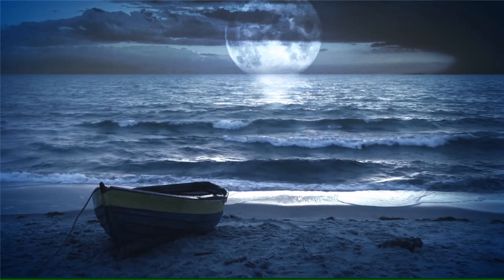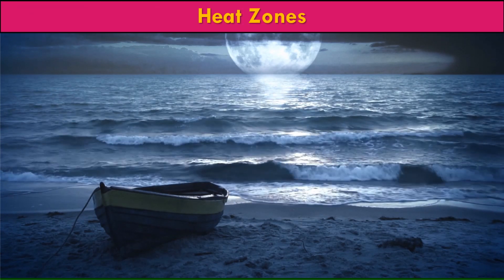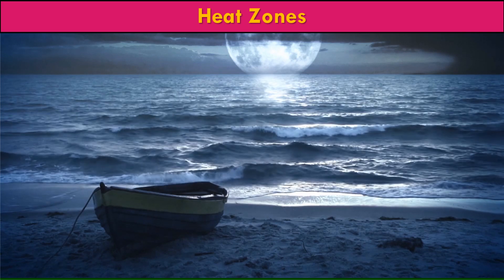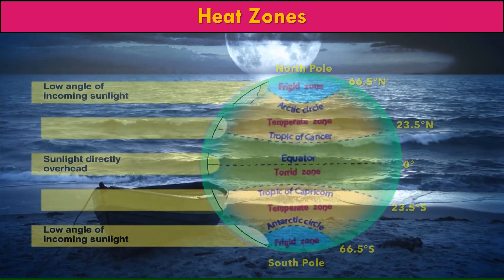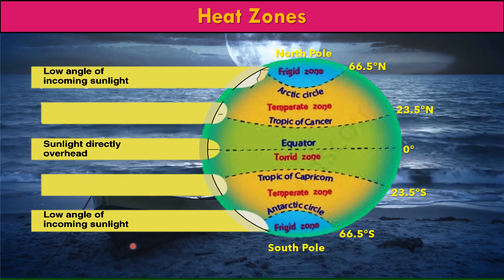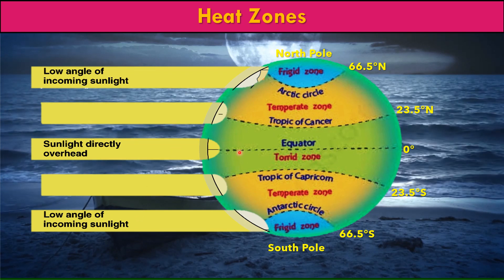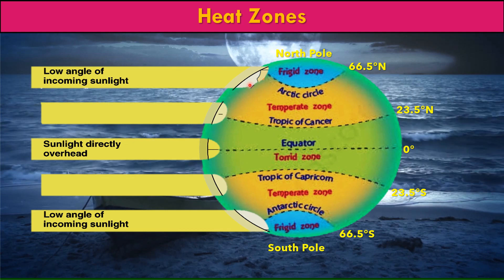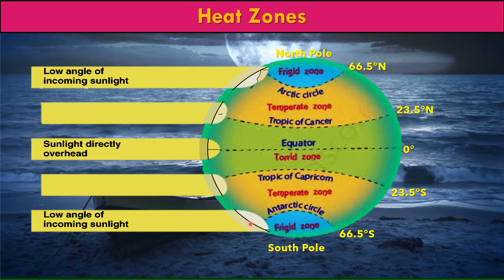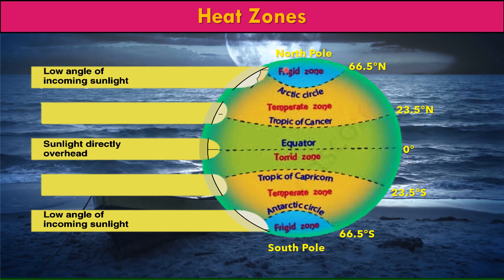To understand the chapter on climate, we first need to understand what heat zones are and how they are created. The spherical shape of the earth along with its movement around the sun causes differences in the angles at which the sun's rays fall on the earth's surface, causing differences in the distribution of heat. As a result, the world has been divided into three distinct heat zones or temperature zones.